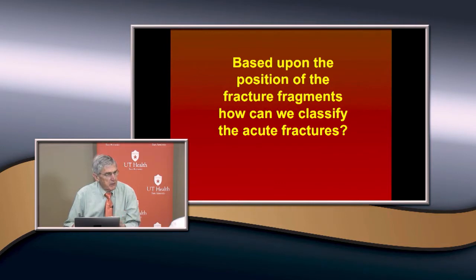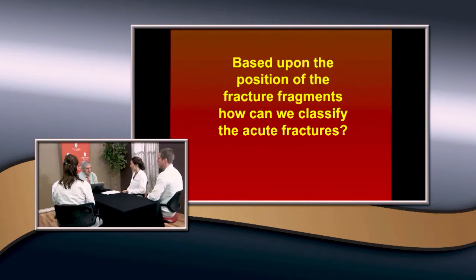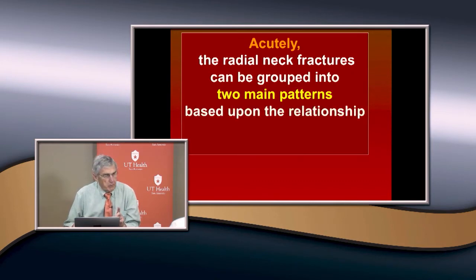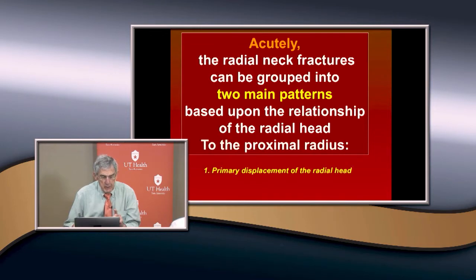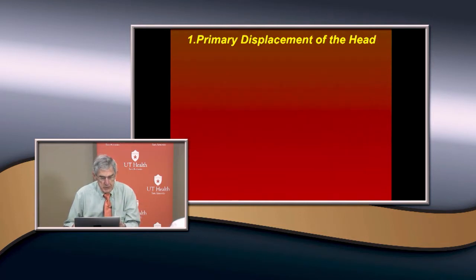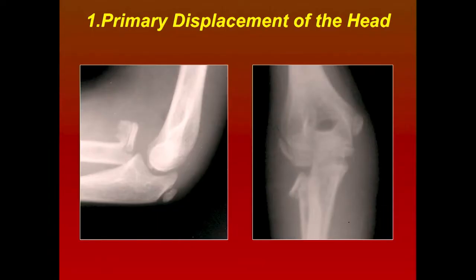Acute radial neck fractures can be grouped into two main patterns based on the relationship of the radial head and the proximal radius. Most commonly, there is primary displacement of the radial head — these are usually isolated radial neck fractures, where the radiocapitellar joint is no longer aligned. Less commonly, the radial head is not displaced but the distal portion — the metaphysis and diaphysis — is displaced.